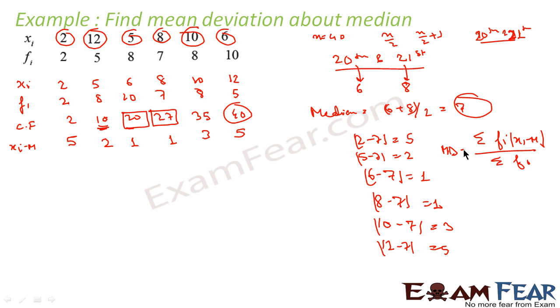The formula was sigma fi into xi minus m mod divided by sigma fi. This was the formula of mean deviation about median. So we have to find sigma fi xi. So first we have to find fi into xi minus m mod.